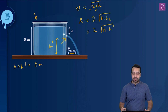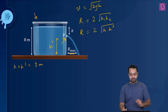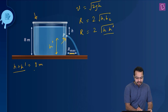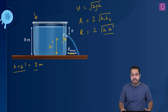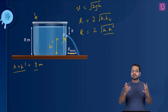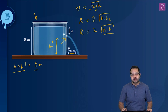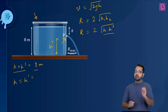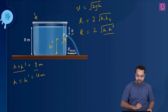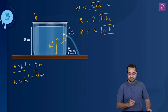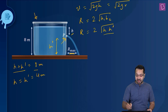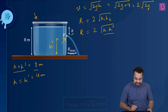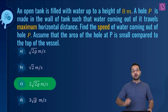For R = 2√(h·h') to be maximum, the product h·h' must be maximum given h + h' = 8. By AM-GM inequality, the product is maximized when h = h', meaning both equal 4 meters. So the speed of efflux at maximum range is √(2g × 4) = 2√(2g). The correct option is C.